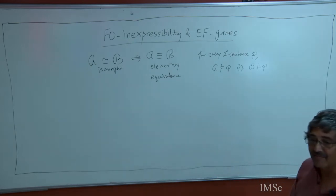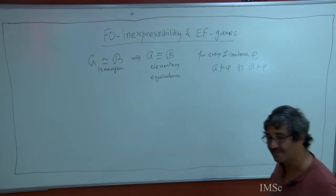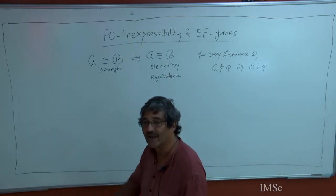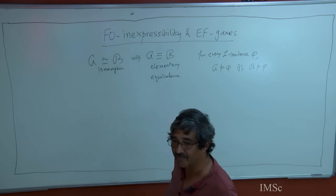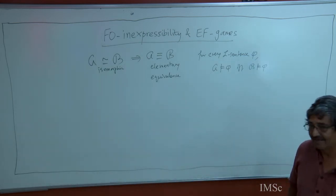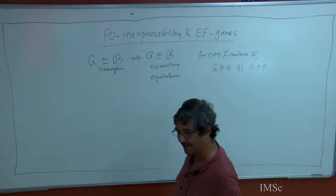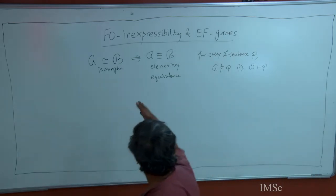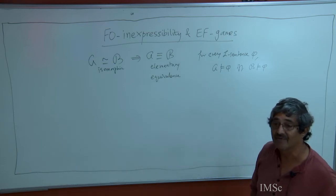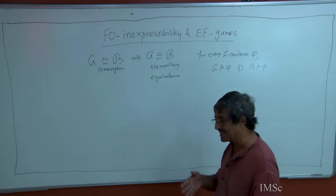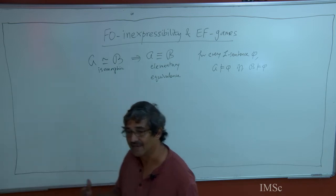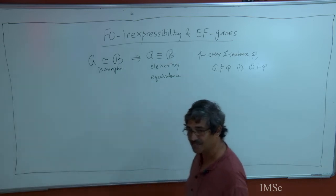You have this idea of A being a substructure of B, which means there is a homomorphism from the domain of A into the domain of B where A is a subset of B and identity is the homomorphism. You can talk about an elementary substructure of B, which means A is a substructure of B but then it satisfies the same formulas. There are many such notions of interest.